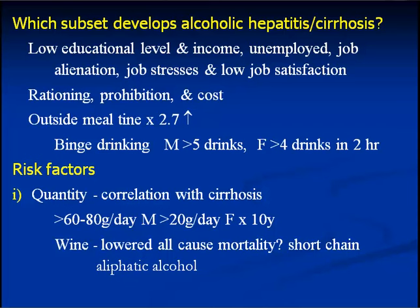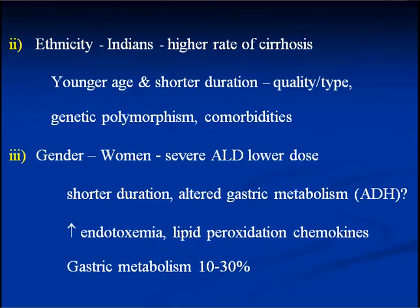Drinks outside of meal time increases the chances of liver disease. The most important factor is the quantity of alcohol taken, and the safe limit would be for males well below 60 grams per day and for females well below 20 grams per day. If this amount is exceeded for more than 10 years, there are chances an individual would develop liver disease. Wine tends to lower all causes of mortality and hence is slightly hepatoprotective, although one cannot give that liberty to have it freely.